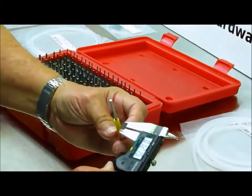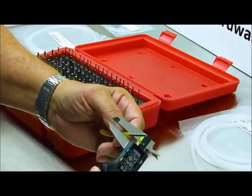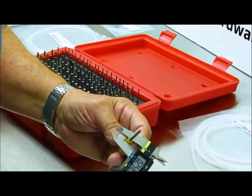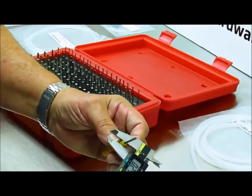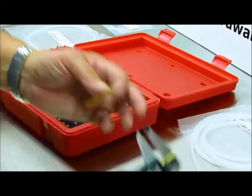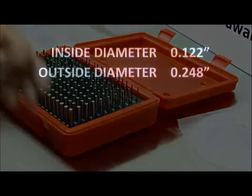Then what we'll do is take the caliper again and now, without depressing the OD, we'll try to get a good feel for what the OD is. And that's coming up with 0.248. So this gives us a starting point for where the tubing would measure.